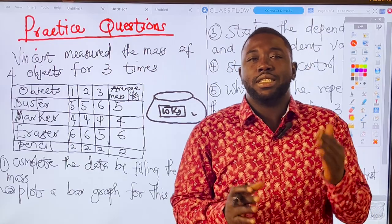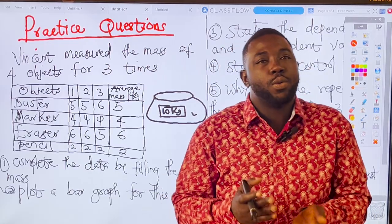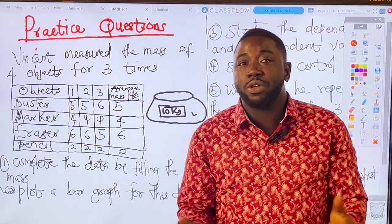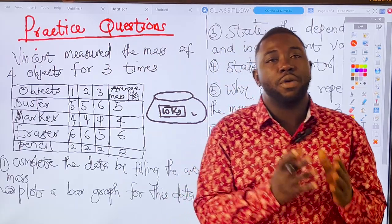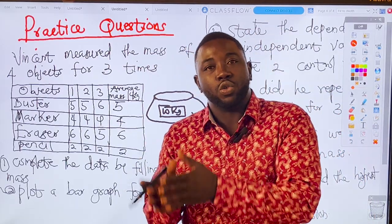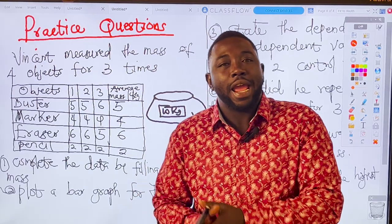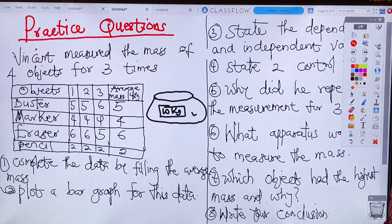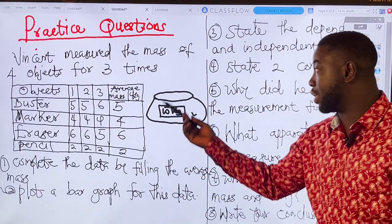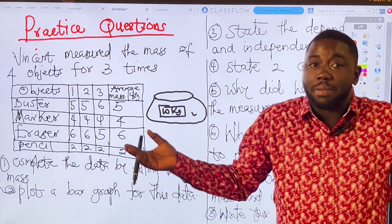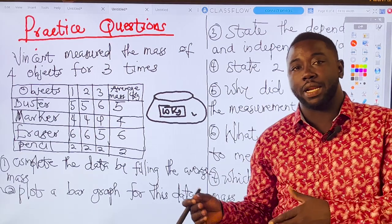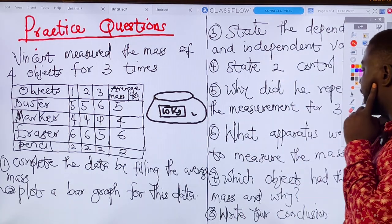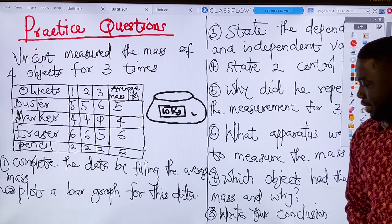By repeating and getting the average, you correct errors and in so doing you make it a fair test. Cambridge can ask this in different ways: should they repeat the measurement, why did they repeat it three times? The answer always comes down to getting the average value, correcting errors, and making it a fair test. For the apparatus used to measure mass, we are talking about a measuring scale or an electronic balance. If it were weight, we would use a force meter.